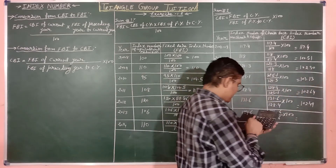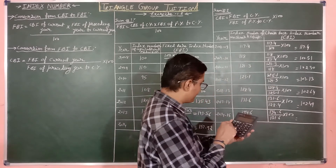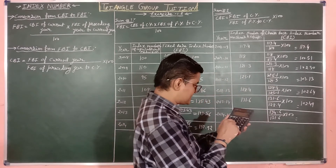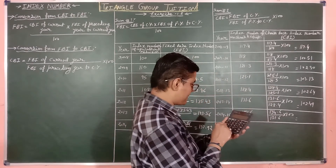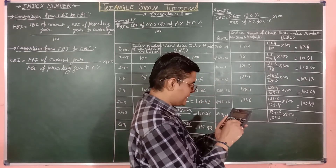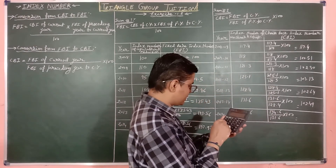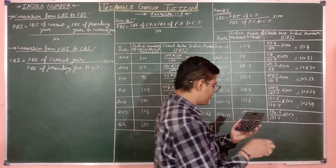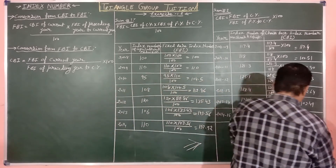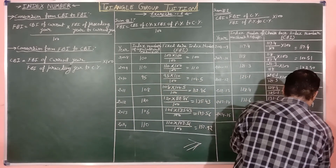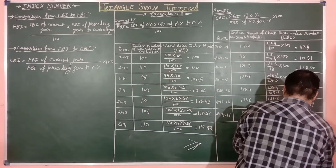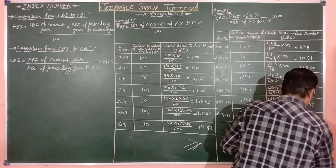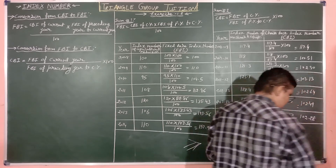Next: 134.6 multiplied by 100, divided by 131.6 — answer will be 102.28.